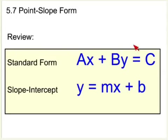A, B, and C have no meaning they're just numbers. For example like 2x plus 3y equals 6 would be an example of a linear equation in standard form.